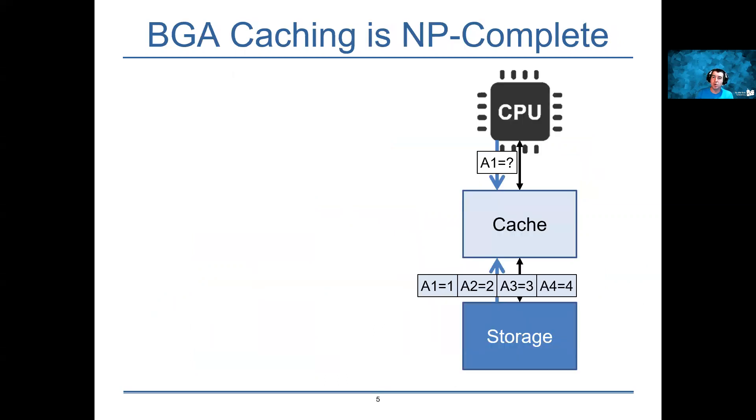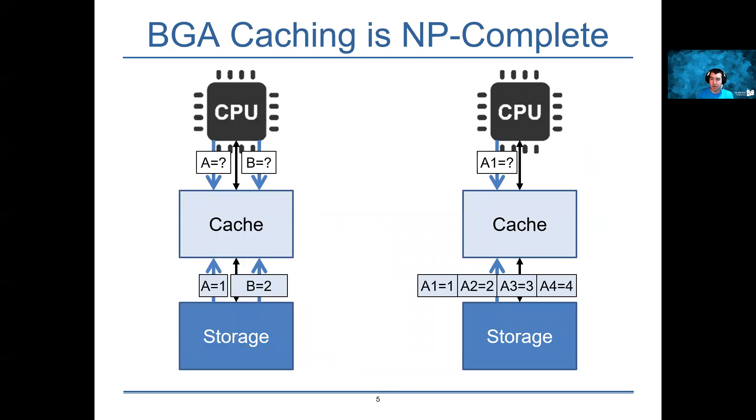In particular, we start by showing that the offline version of this problem is NP-complete using a reduction from variable size caching, where data items can have different sizes. We reduce that to the block granularity aware caching problem by treating variable size items as if they were approximations using different numbers of data items corresponding to the same block in the block granularity aware problem.